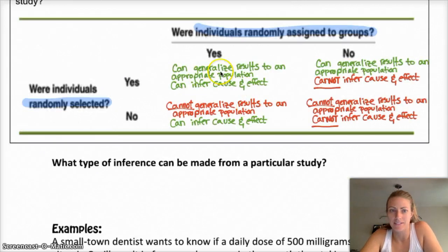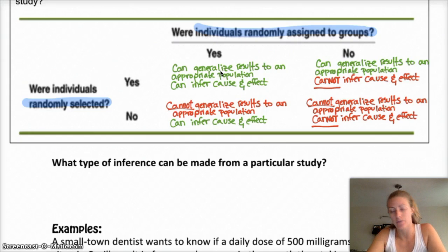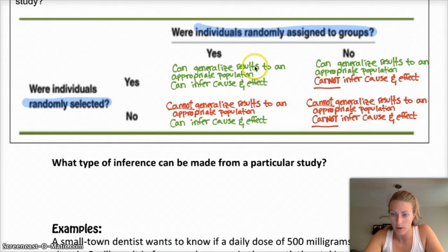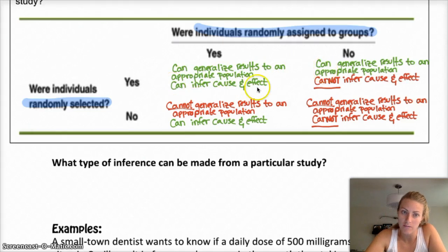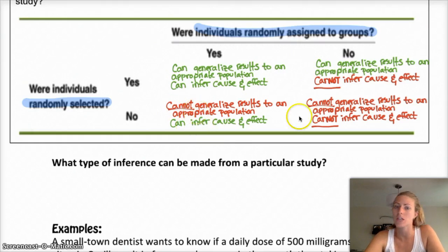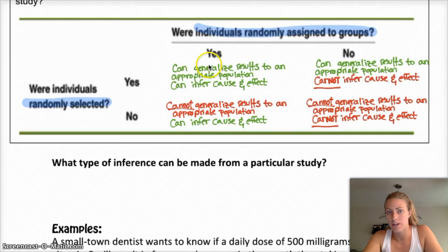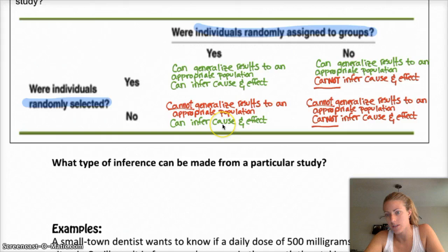Here's the breakdown: if you have random selection — if you randomly selected the individuals for the study — you can generalize to the appropriate population. If you have random assignment to treatments, you can infer cause and effect. If you don't have random selection but you do have random assignment, then you can infer cause and effect but not generalize to a larger population. The red is the worst case scenario and green is the best case scenario. Typically for observational studies we have the limited case, and for experiments we typically have random assignment. But the best case scenario is having both.